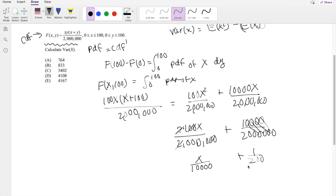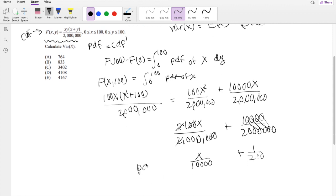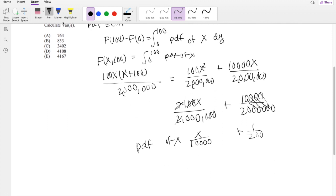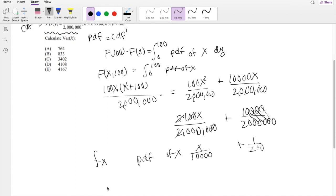All right, so this is what you have as your pdf of x, or you can also think of this as a marginal distribution for x. And now we can find the expectation.